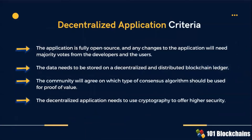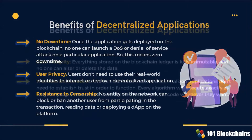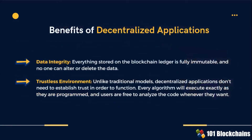Any changes to the applications will need majority votes from the developers and from the users. The community will agree on which type of consensus algorithm should be used for proof of value. Decentralized applications offer zero downtime. This feature allows users to stay anonymous, and no entity on the network can influence other users' interactions with the network.